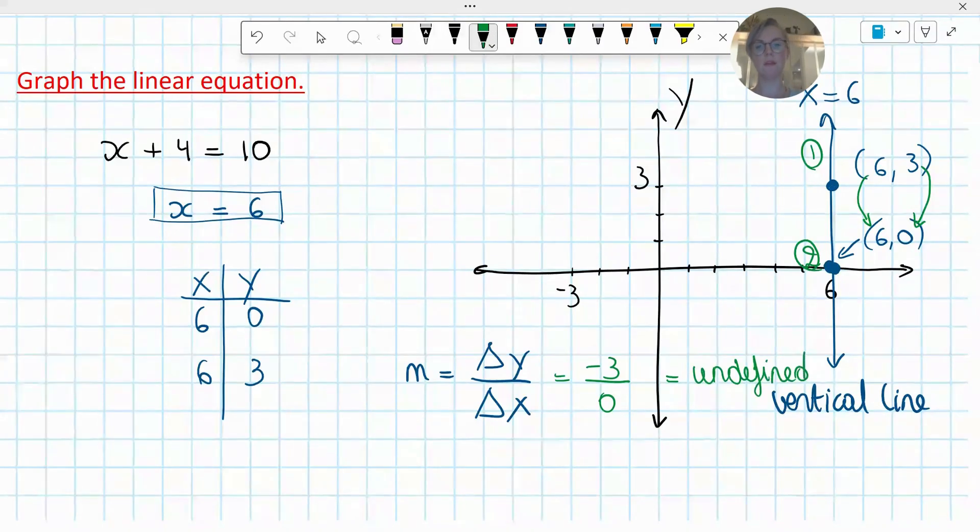Yeah, this is an undefined slope. A vertical line has an undefined slope.